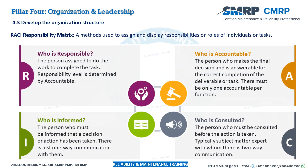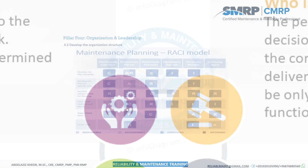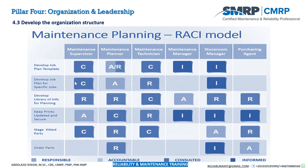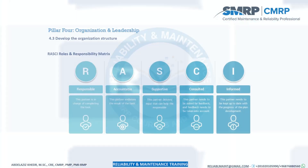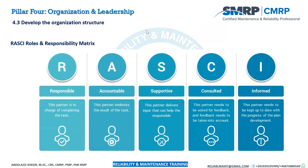We should also have a RACI matrix that defines who is Responsible, Accountable, Consulted, and Informed for each task. Sometimes it is called RASCI — adding Supportive. A sample maintenance planning RASCI model is shown here, illustrating how the matrix is structured.